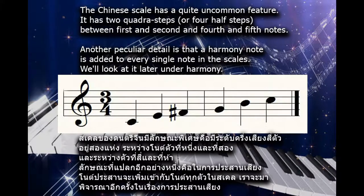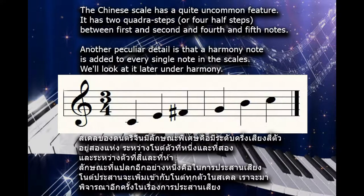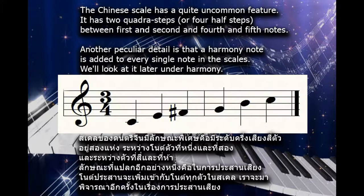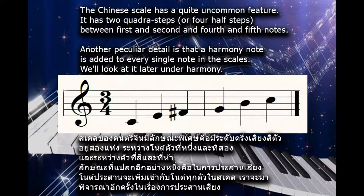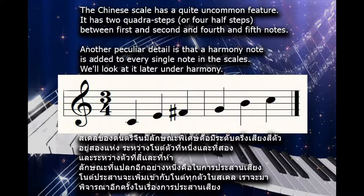The Chinese scale has a quite uncommon feature. It has two quadrasteps, or four half steps, between the first and second and fourth and fifth notes. Another peculiar detail is that a harmony note is added to every single note in the scale. We'll look at it later under harmony.